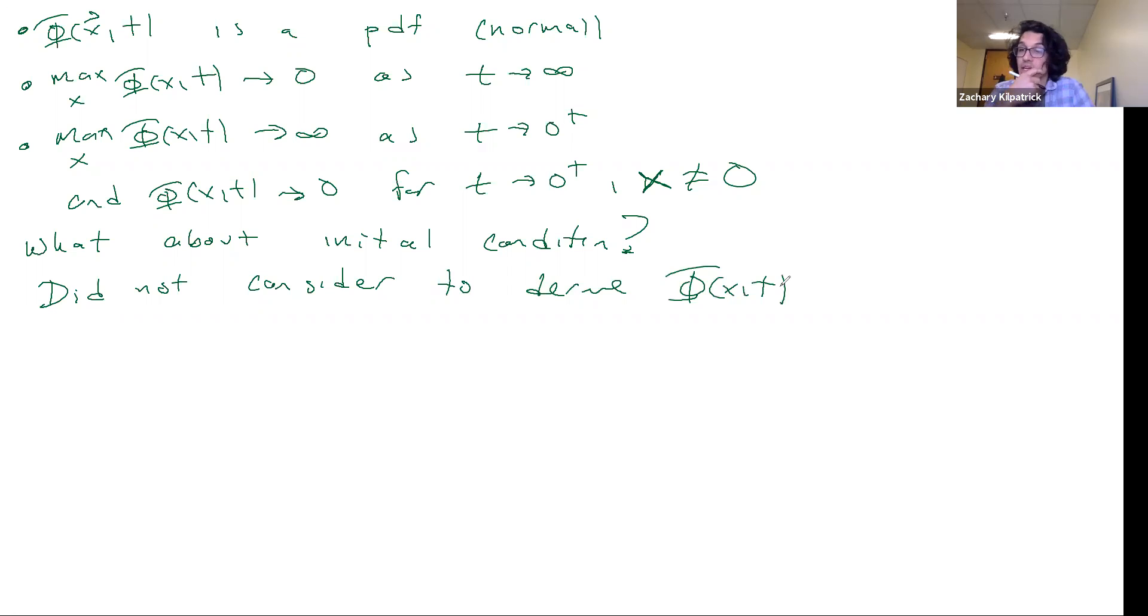The way that you typically get solutions to the Cauchy problem that's described by the heat equation is that you start with the fundamental solution, and then you incorporate the initial condition in order to get the solution to your particular initial value problem.